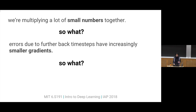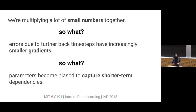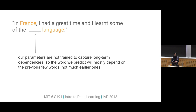The errors that arise from further and further back time steps will be harder and harder to propagate into the gradient at future time steps. Recall the example from the beginning — the whole point of using recurrent neural networks is to model long-term dependencies. But if our parameters are biased to capture short-term dependencies, even if they see the whole sequence, the parameters will become biased to predict things based mostly on the past couple of words.